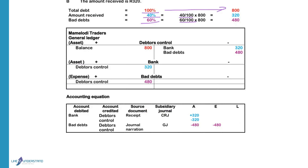The balance of the debtor is 800 Rand. We will decrease the debtor with the amount paid and the bad debts so that the debtor's account can be written off, because we are closing his account. The bank account is debited to increase the asset. Bad debts is debited to increase expenses. Debtors control is credited to decrease the asset on the credit side. We change one asset into another asset. We will issue a receipt as proof of payment and any money received is recorded in the cash receipts journal.